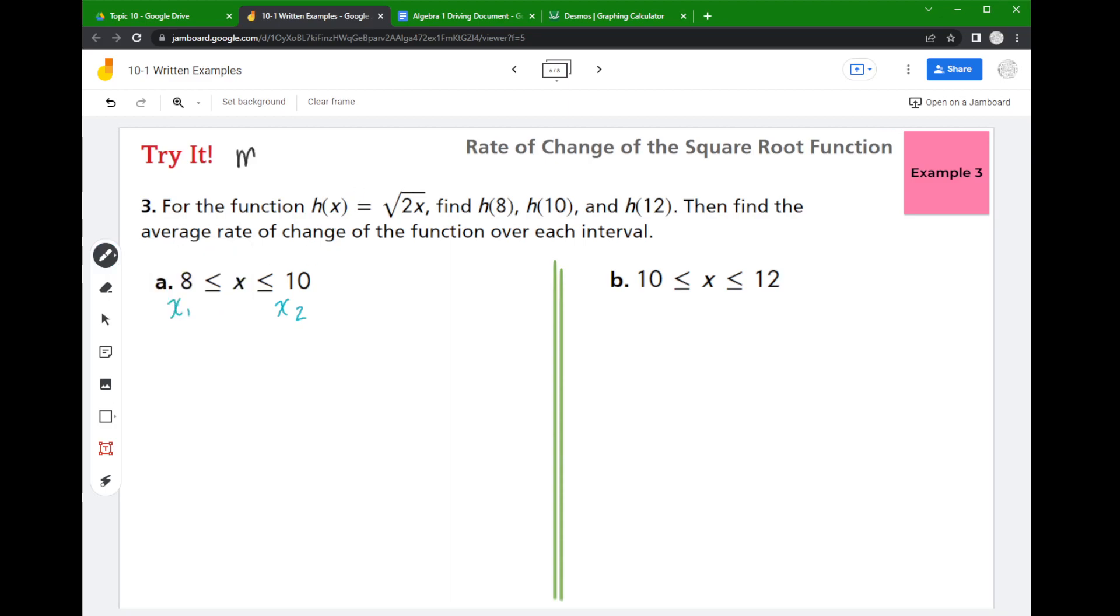So this 8 is our x1, and this 10 is our x2. So just as a reminder, the slope formula is the change in your y values divided by your change in your x values. So those x values are real easy, so down below I have 10 minus 8.